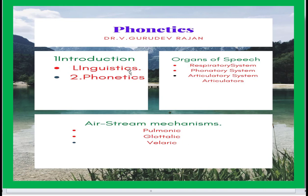Each block has subdivisions. Introduction has two subdivisions: Linguistics and Phonetics. Organs of Speech has four subdivisions: Respiratory System, Phonatory System, Articulatory System, and Articulators. Airstream Mechanism has three subdivisions: Pulmonic Airstream Mechanism, Glottalic Airstream Mechanism, and Velaric Airstream Mechanism. Now we will see what is the course outcome of this unit.